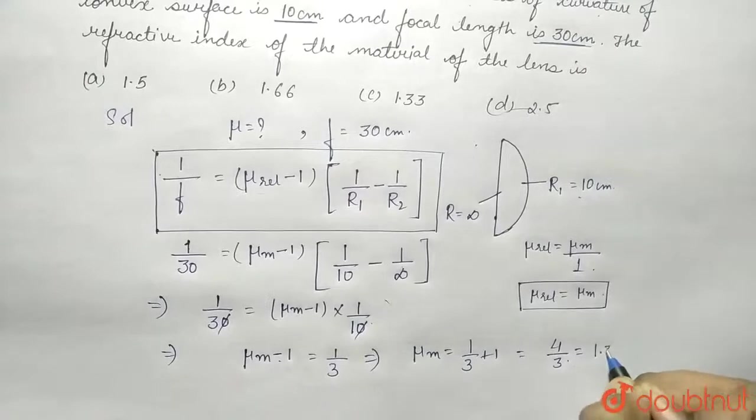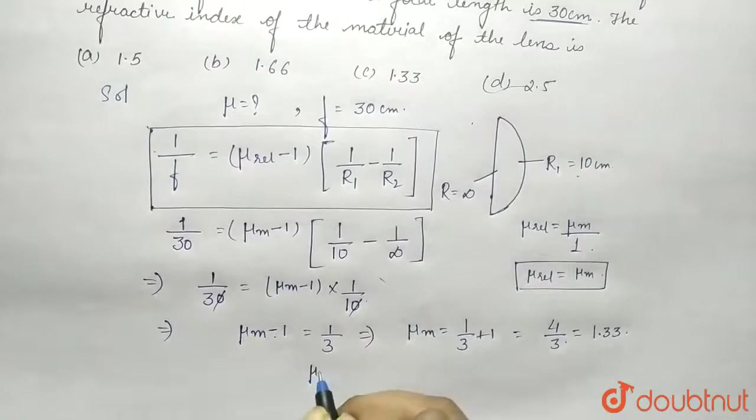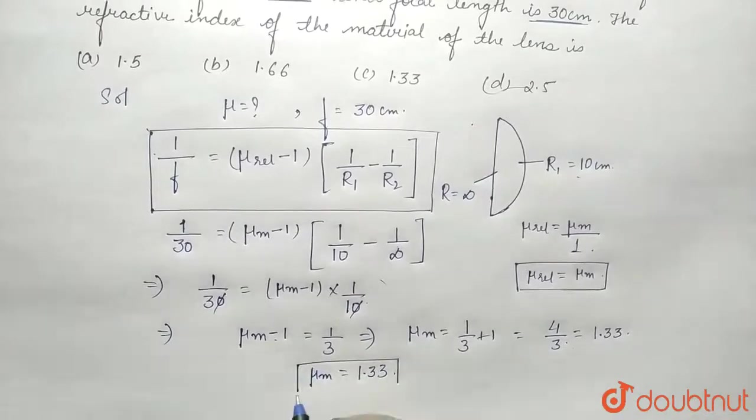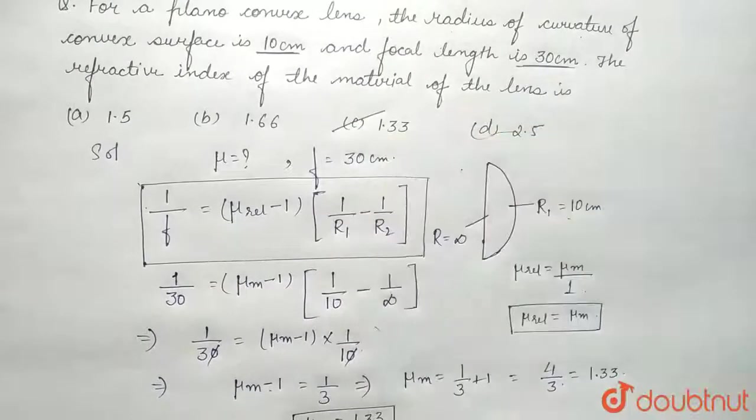This is equal to 1.33. So we got μ of medium, that is refractive index of the medium, as 1.33. This is what we need to find. Looking into the options, we can see that option C is the correct answer.